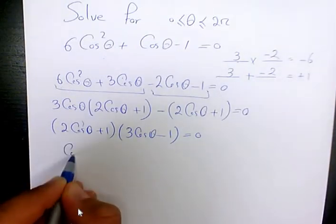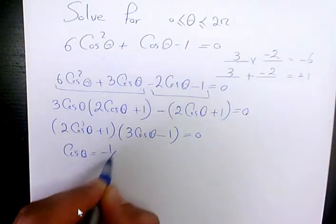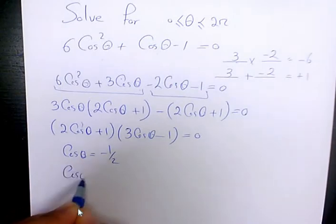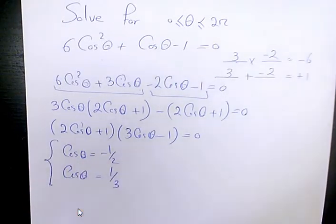So we have 2 cosine theta plus 1 times 3 cosine theta minus 1 equals 0. So one answer is going to be cosine theta equals negative 1 over 2, and the other one is going to be cosine theta equals 1 over 3. These are the two cases.